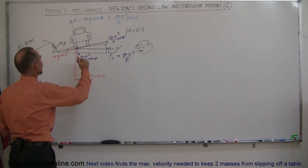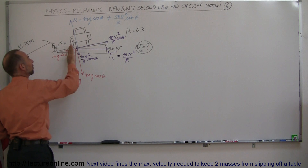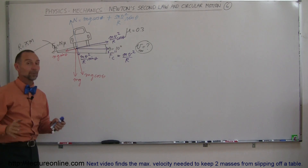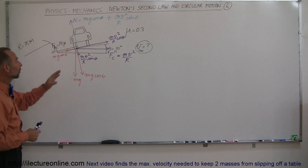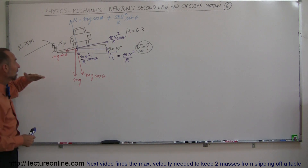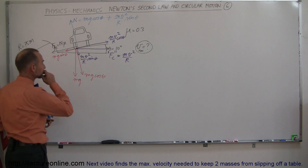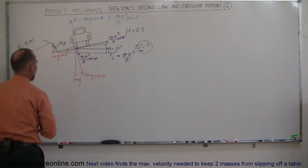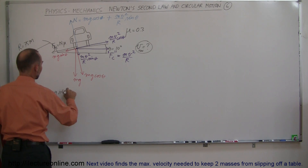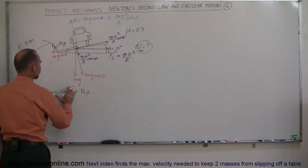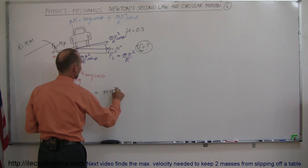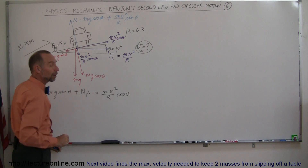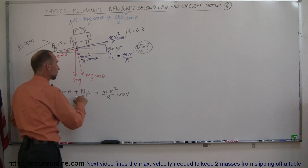Now we can see the balancing of forces. We have mg sine theta and the friction force trying to push the car to the left, and mv²/R times cosine theta — the parallel component of centrifugal force — trying to push the car up the hill. When they're balanced, we can find the maximum velocity. The friction force will always match what is required to keep the car in place until it can no longer do so.